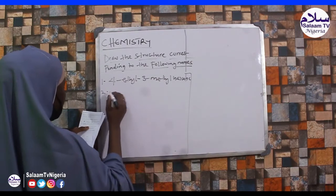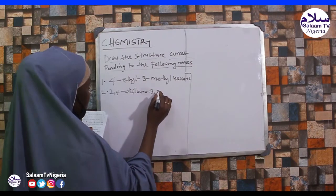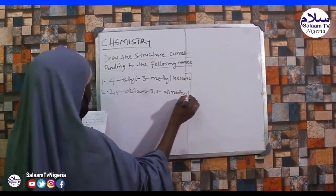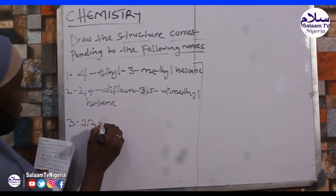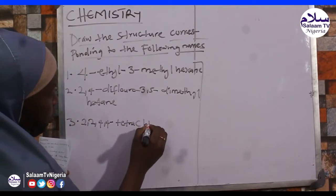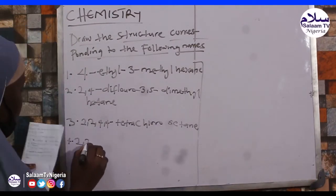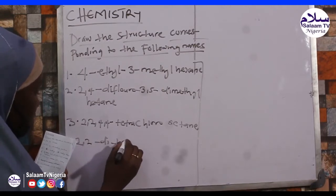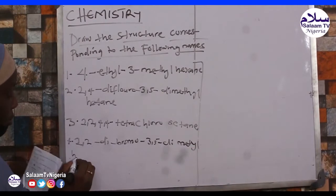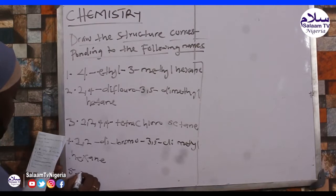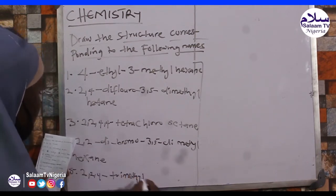Number 2: 2,2,4,4-tetrachlorodecane. Number 4: 2,2-dibromo-3,5-dimethyl. Number 5: 2,2,4-trimethylpentane.